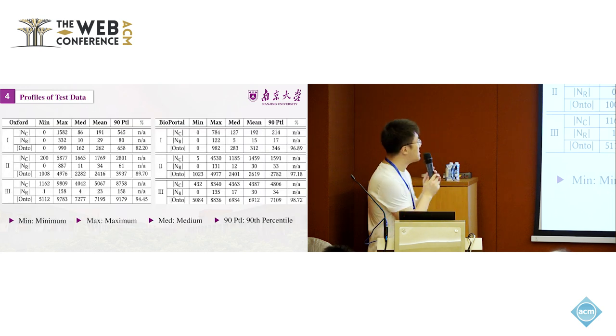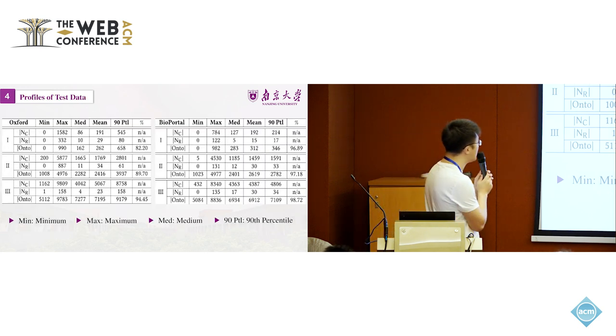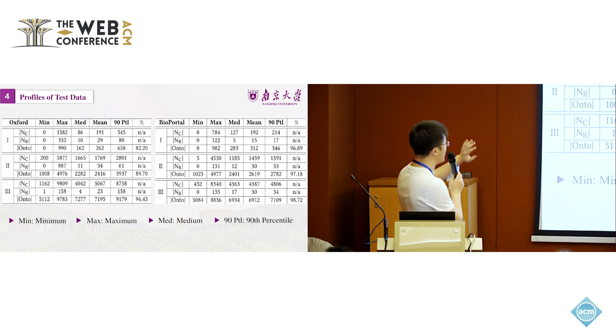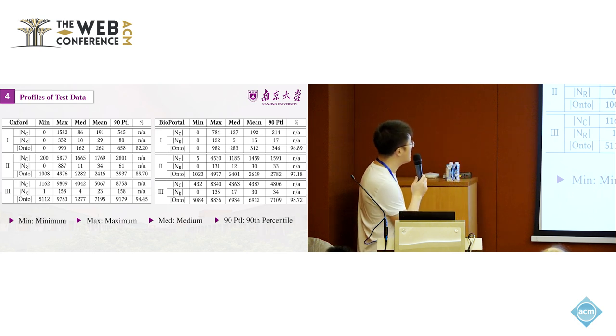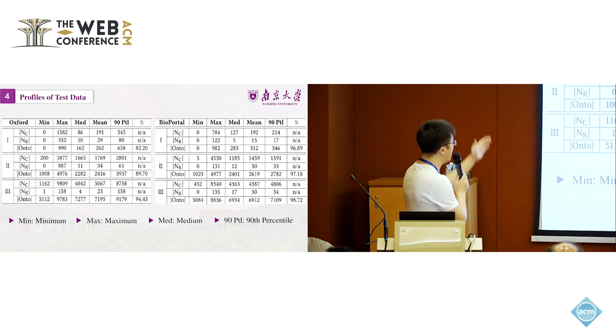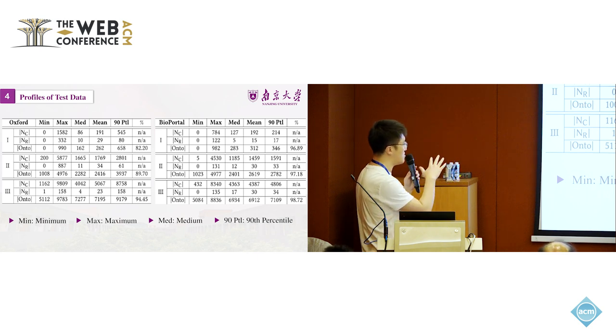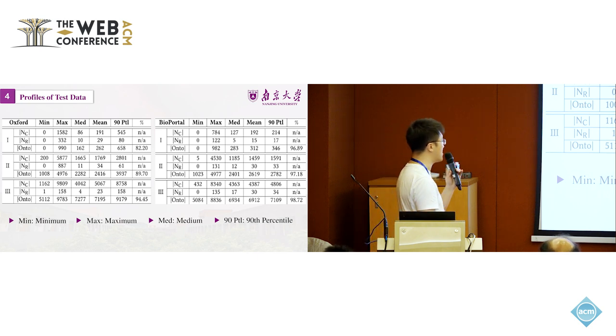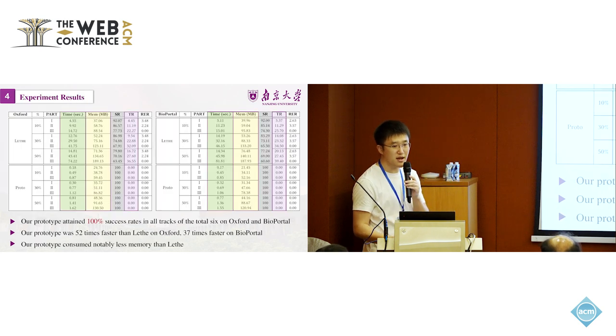These are the statistical data for the test data. The mean, the max, median, and mean. You see these test data has collected all ranges of ontologies from the real world.